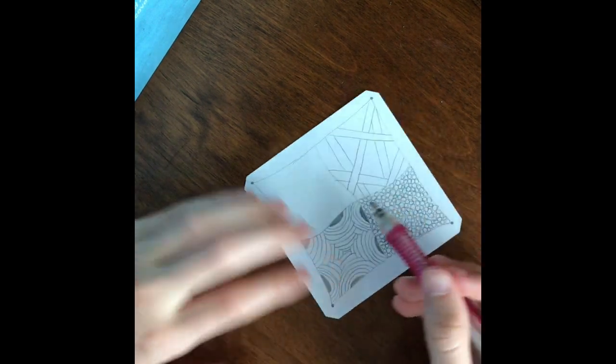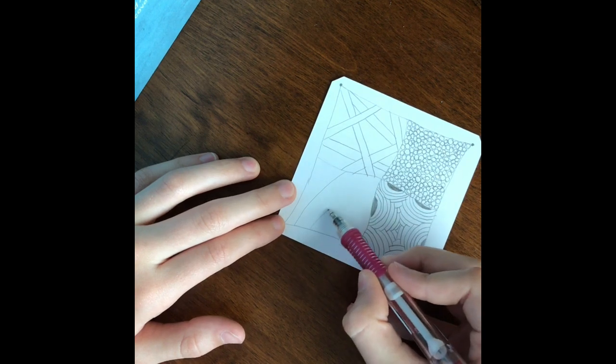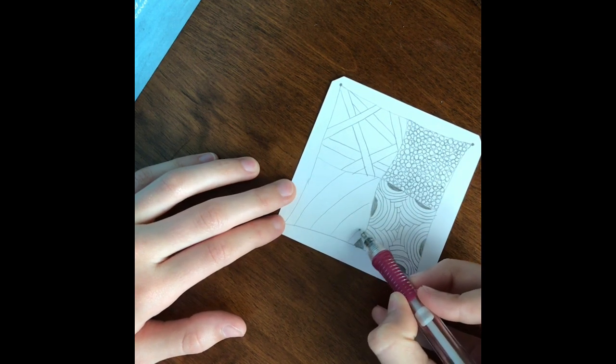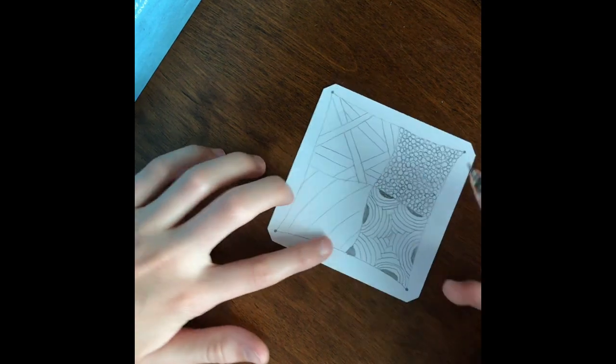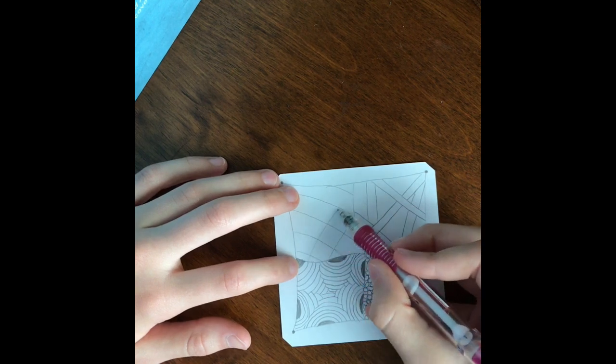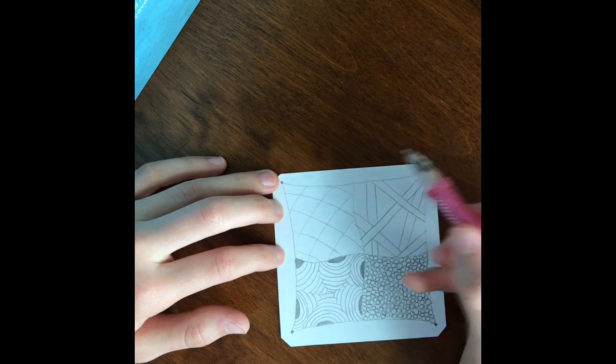You're going to want to start out with a nice grid, curving a bit but always keeping the same distance apart. And the other way. And you have a nice little grid right there.